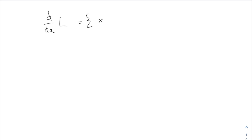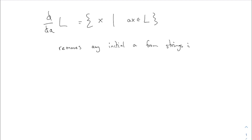I hope you all remember the definition of the derivative. If I take the derivative with respect to 'a' of some language, this is defined to be all strings x such that ax is in the language. You look for all strings in your language which start with 'a', take the 'a' away, and give what's left over. Strings which didn't start with 'a' get thrown away entirely. It removes any initial 'a' from strings in L and totally discards any strings in L not starting with 'a'.